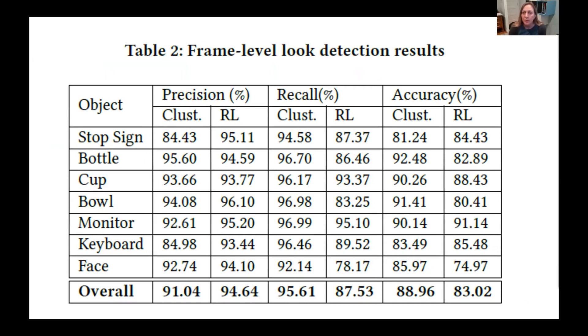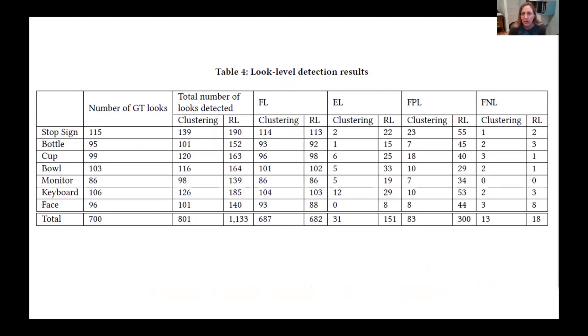Now for some results. Although the frame level results showed somewhat better performance of the clustering approach in terms of accuracy and recall, we were more interested in the look level performance comparison of the clustering versus run length approach. The look level detection results that are shown here in Table 4 reveal that the numbers of the false negatives are low, 1.8% for the clustering approach and 2.6% for the run length approach, indicating that most of the ground truth looks are being detected by both algorithms.